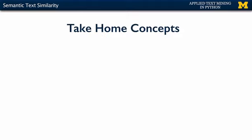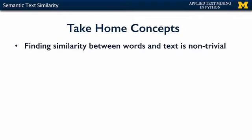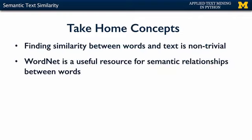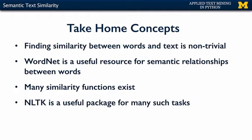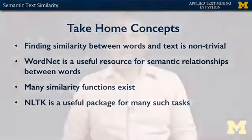The key takeaways are that finding similarity between words and text is non-trivial, but resources like WordNet are very useful for semantic relationships and similarity. NLTK provides easy access to many similarity functions for these tasks, and you can scale from word similarity to text similarity between sentences. These similarity functions are very useful for natural language understanding tasks. In the next video, we are going to go into more detail about topic modeling. See you there.